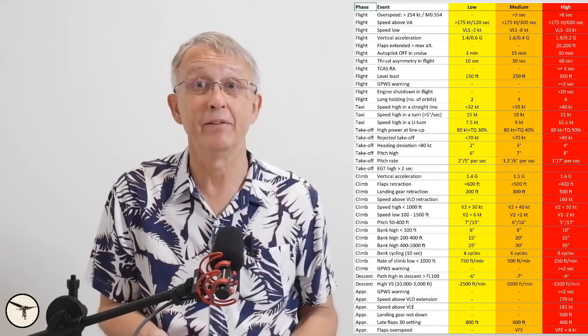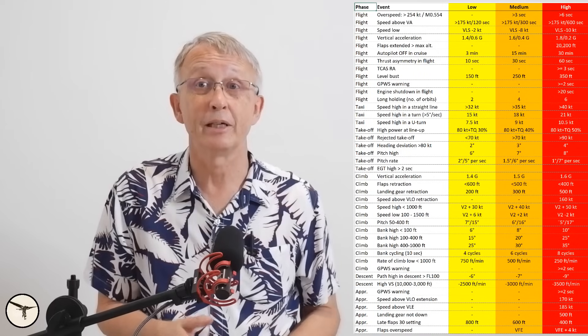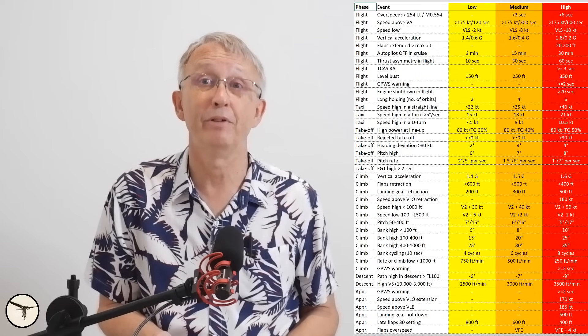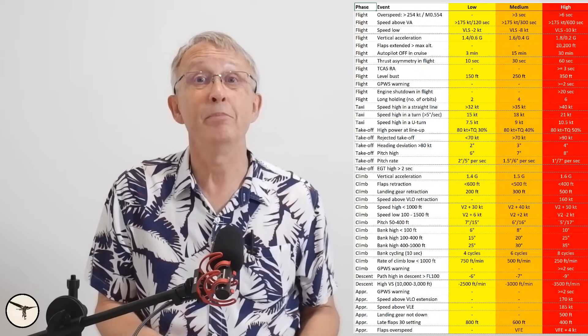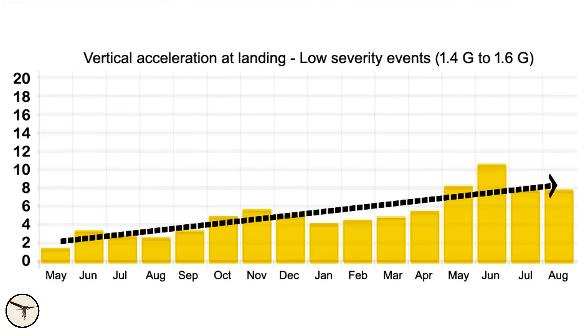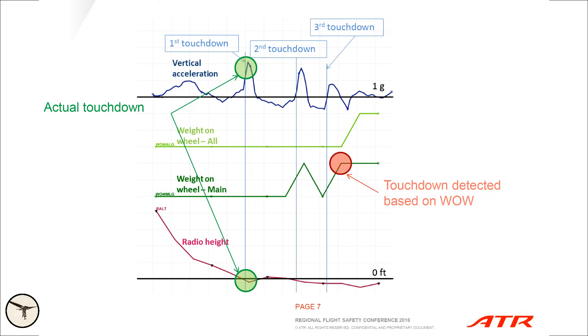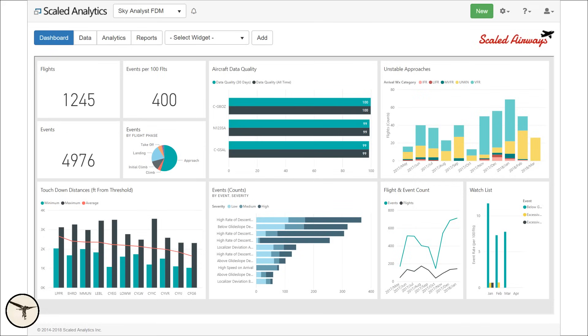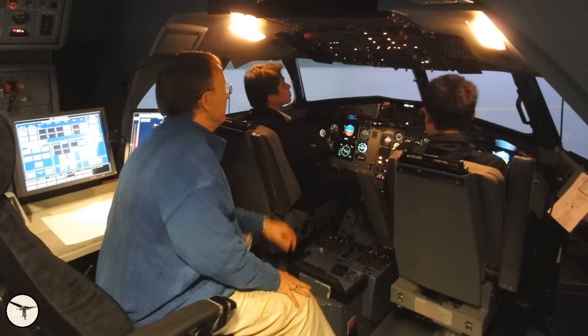When a threshold is exceeded, the analysis software triggers an alert, categorized as yellow, amber, or red, depending on the severity. A well-implemented FDM program offers several key benefits: detect trends in operations that could negatively impact safety, even before they lead to serious incidents; capture safety-relevant events during flight, even if the flight crew didn't report them; create a comprehensive and accurate picture of safety risks, which is essential for a robust safety management system; verify the effectiveness of correcting actions, such as training, procedure changes, or equipment retrofits, and many other safety-related applications.